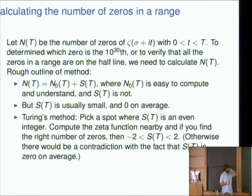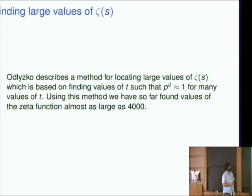But I'll tell you roughly how we calculate the number of zeros in a range. So the number of zeros is n of t. There's this n naught of t, which is easy to understand, and some s of t, which is hard to understand. So this s of t, the obvious way to compute it would be to look at the variation in the argument of the zeta function. And then you have to compute off the line. But s of t is known to be usually small. So if you pick a spot where it's zero, there's a method of Turing that lets you prove it's zero by calculating in a large enough area. Because otherwise there would be a contradiction with the fact that it's zero on average.